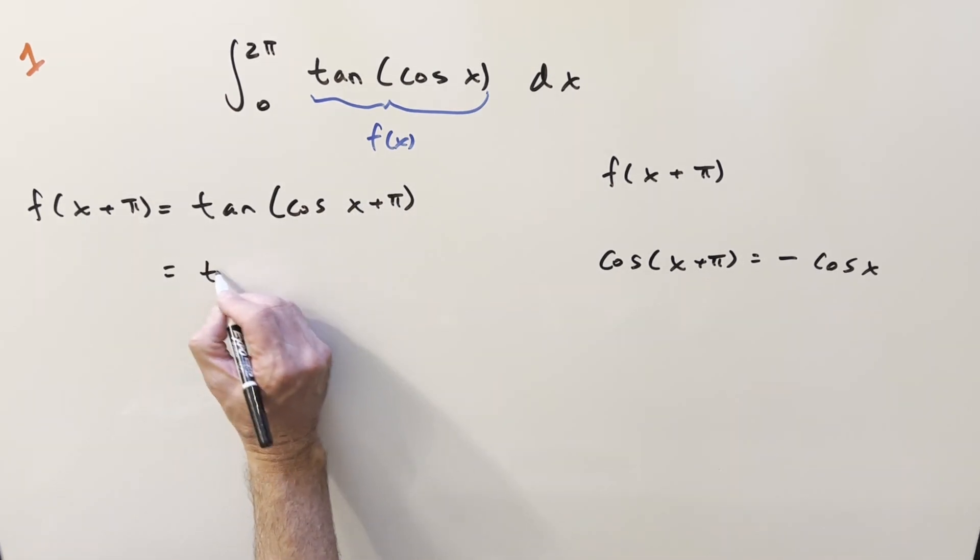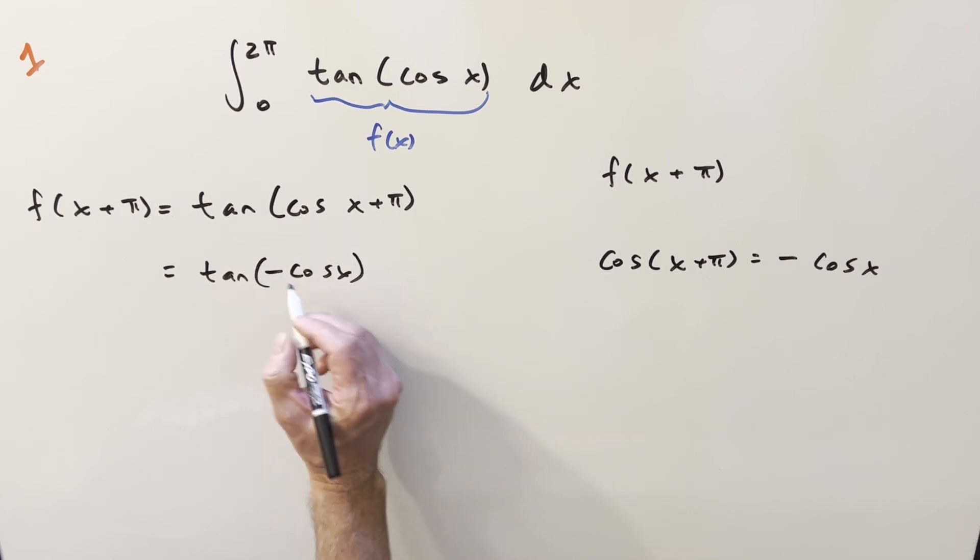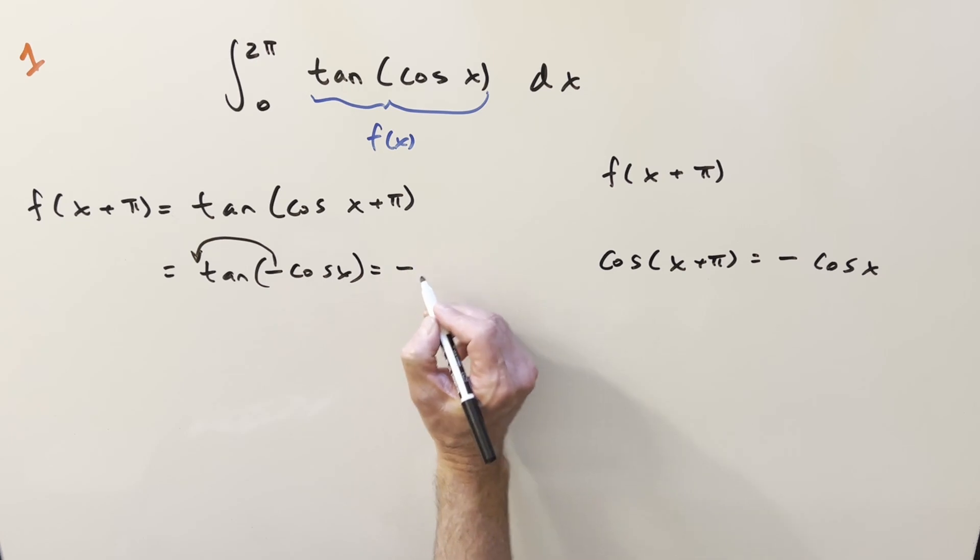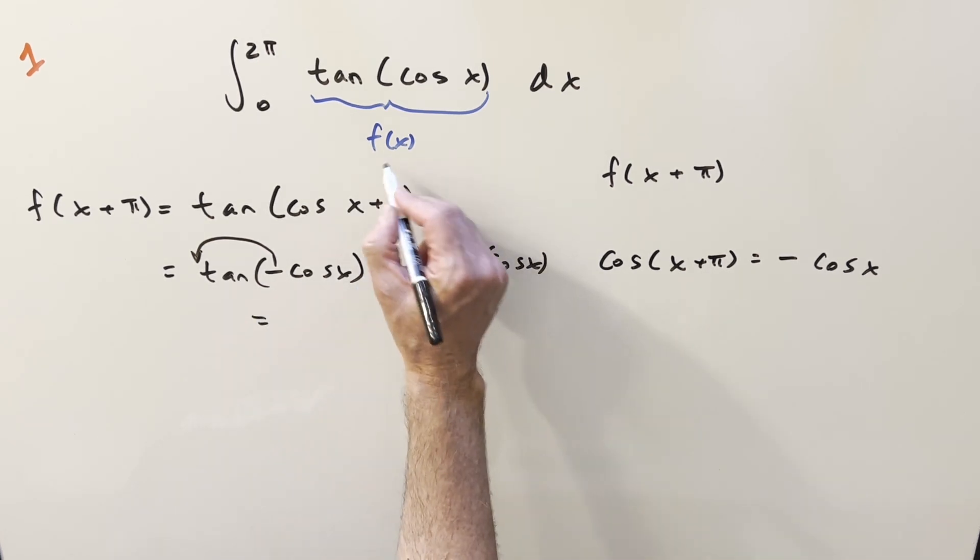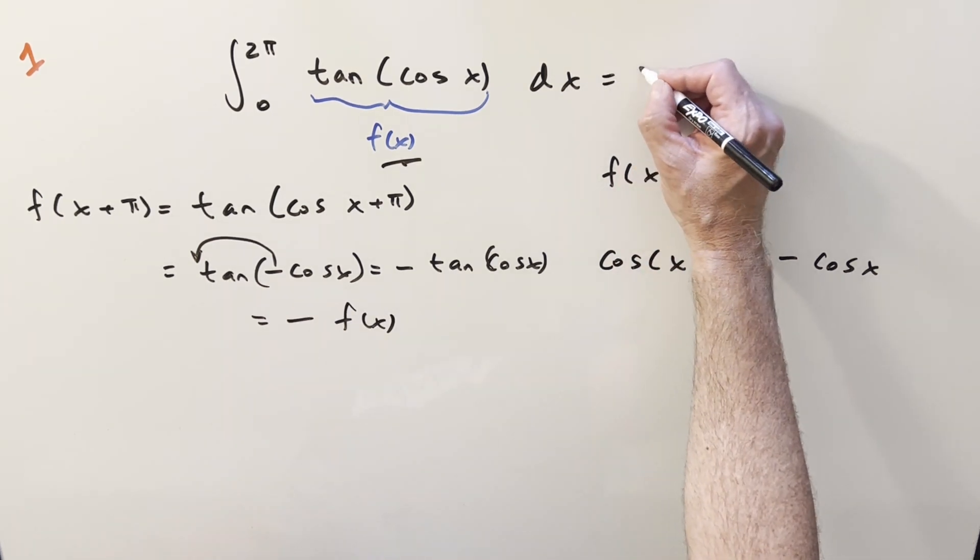And then if this is going to be minus cosine x, what we can do is tangent is an odd function, which is going to allow me to take the minus sign and bring it up front here. So we have minus tan cosine x, but that's just going to be the same thing as minus f of x. And so this check is true, and so our whole integral is just zero.